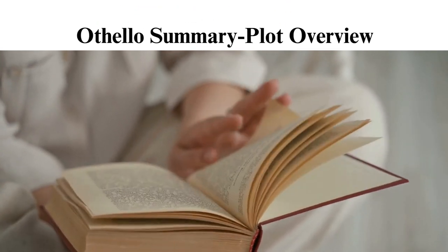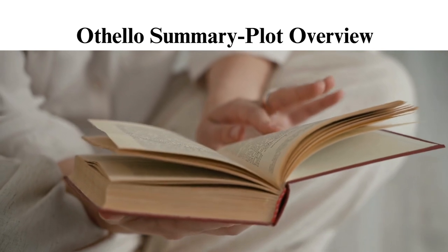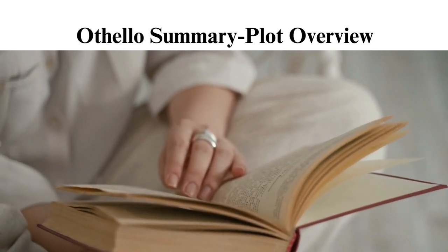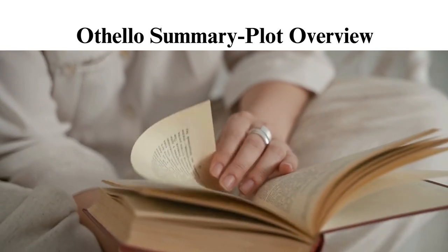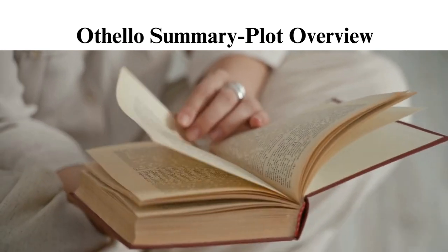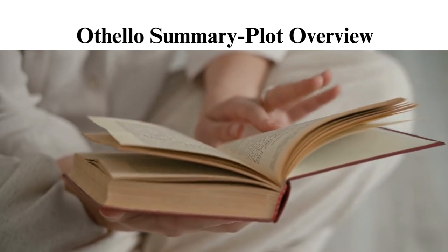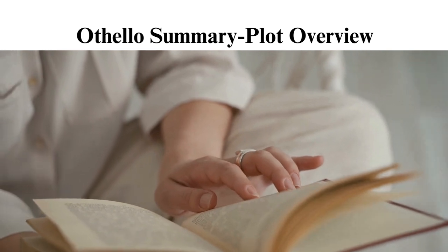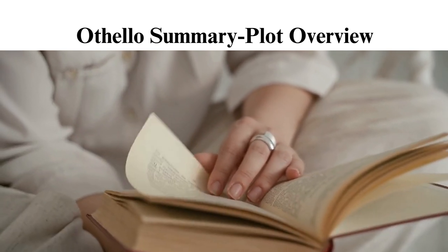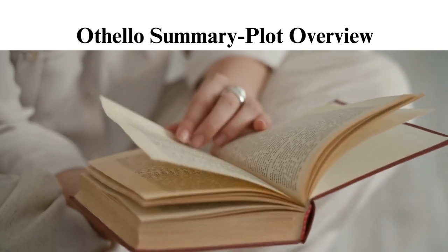Othello is one of Shakespeare's most famous works because it revolves around the story of Othello, a Moorish military commander-general in the Venetian army. He and his troops are preparing for battle against the Ottoman Turks, who plan to invade Cyprus. However, he fails to promote Iago to chief lieutenant and instead appoints Cassio. Iago becomes jealous and plots against them.